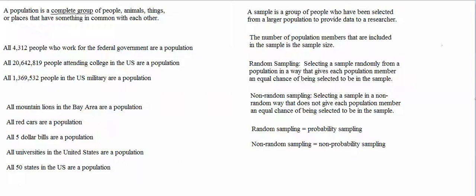The purpose of calculating a sample mean is to estimate or to get a rough idea of what the population mean equals. The mean of a sample is highly unlikely to be exactly the same as the mean of the entire population. However, the mean of a sample is often close to the mean of the entire population.